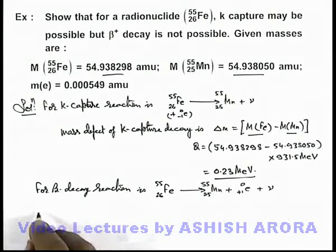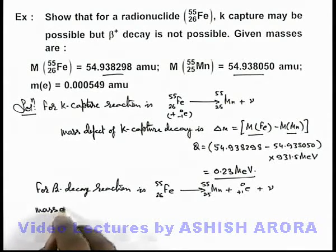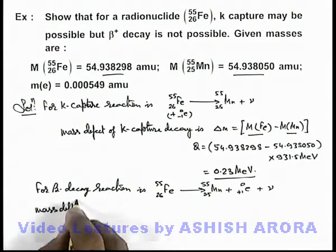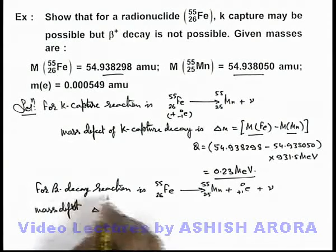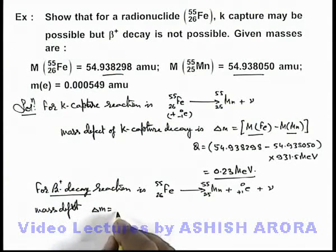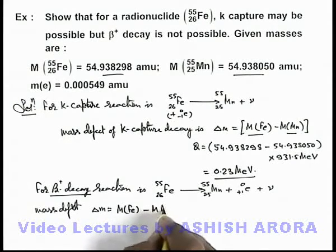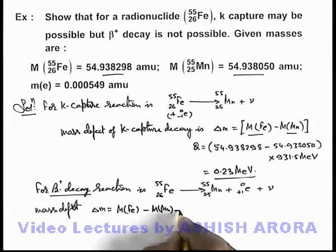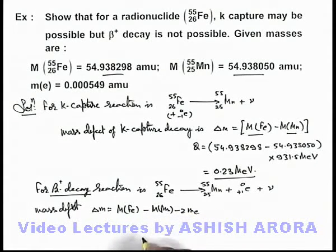In this situation, the mass defect of the beta-plus decay reaction delta M can be written as: mass of iron minus mass of manganese minus twice the mass of electron. The Q-value in this situation would be this mass defect multiplied by 931.5 MeV.